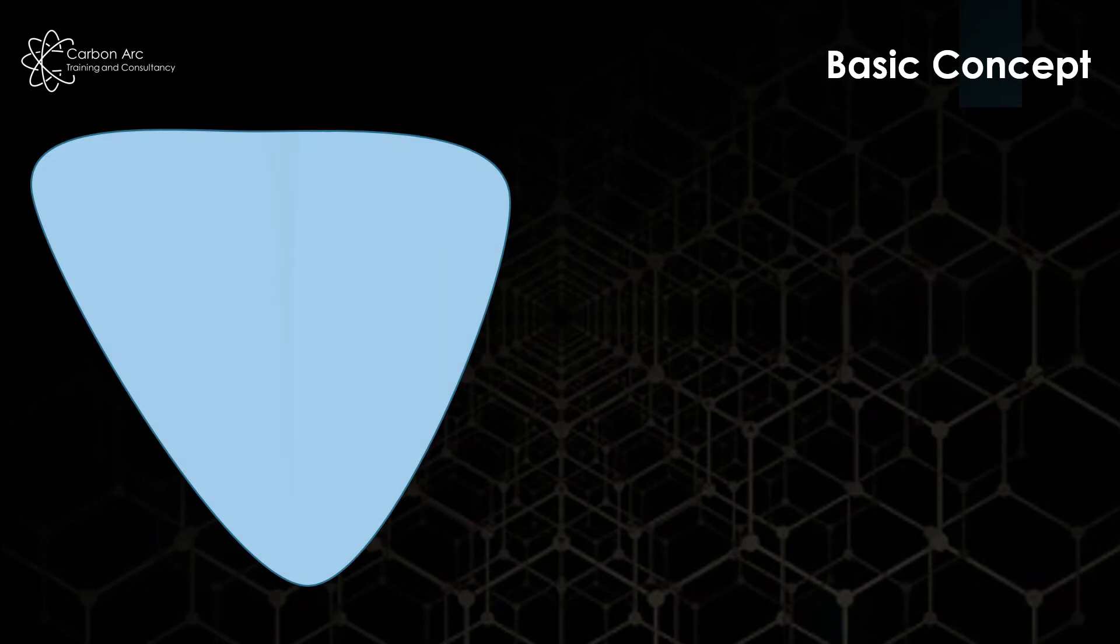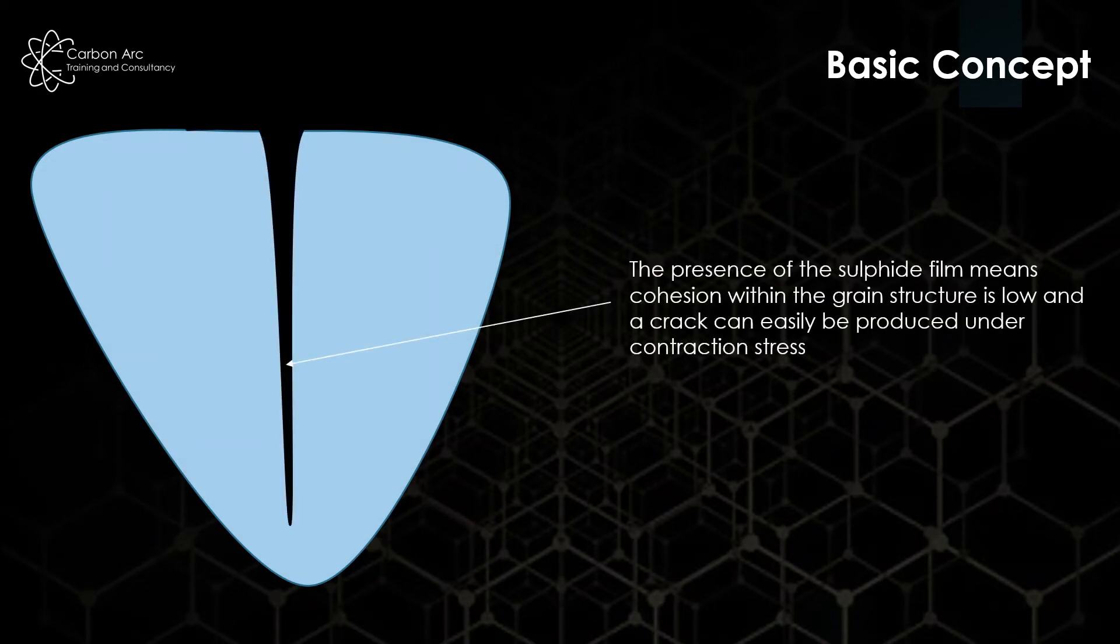Now when those sulfides form in the middle and the material contracts and cools, the grains aren't locked together because they can't cross that sulfide band. So when it cools and contracts we get an excess of stress which then pulls the center of the weld apart, which is why we also call this type of failure centerline cracking.